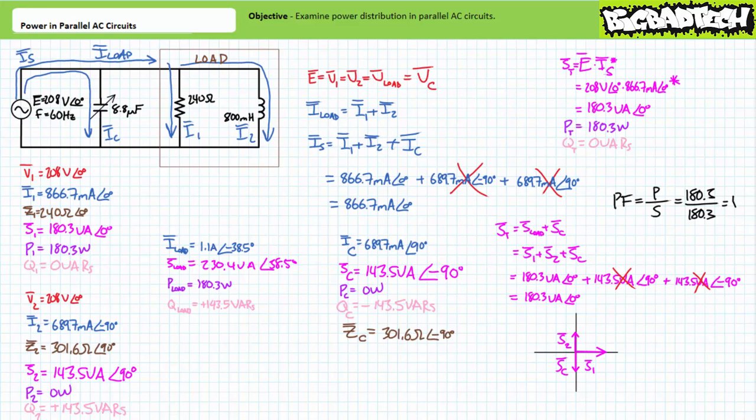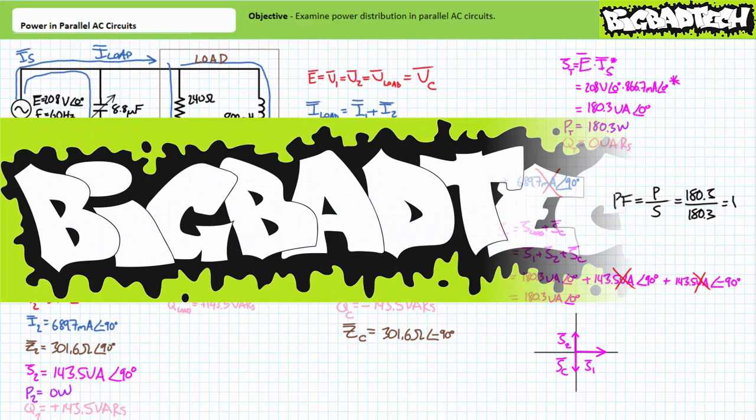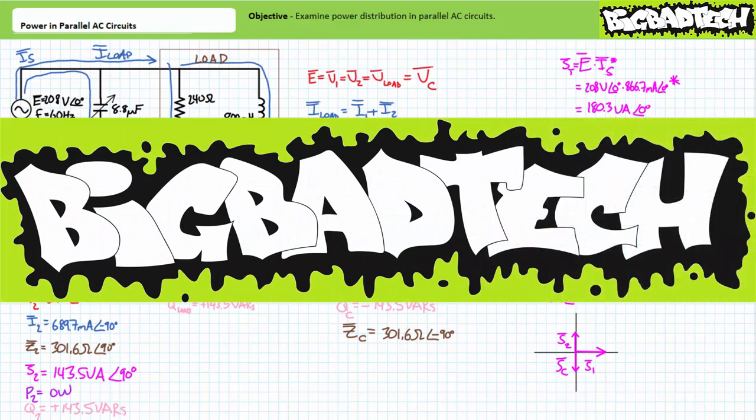We'll examine power factor correction in greater detail in later lectures. This concludes this lecture. In conclusion, this lecture examines several illustrated examples of power distribution within parallel AC circuits, and we quickly examine power factor correction within parallel AC circuits. Remember to review these concepts as often as you need to really drive it home. Thank you very much for your attention and interest, and we'll see you again during the next lecture of our series. Remember to tell your lazy lab partner about this resource and be sure to check out the Big Bad Tech channel for additional resources and updates.